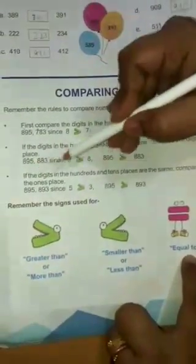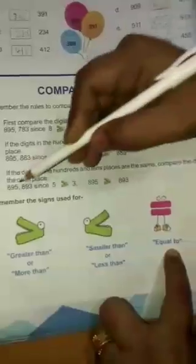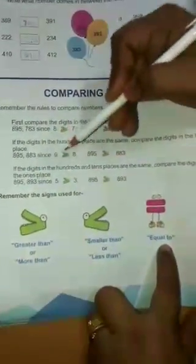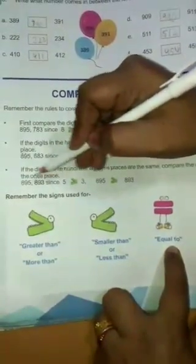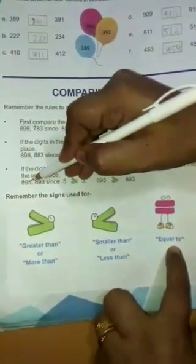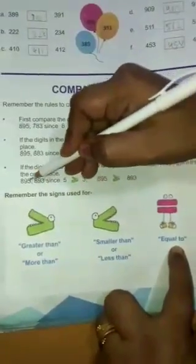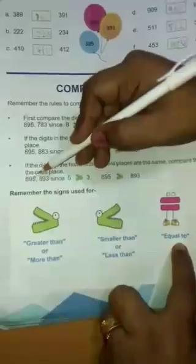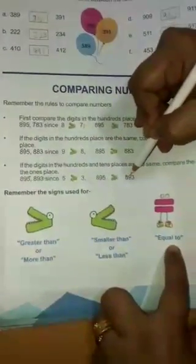Next, if the digits in the hundreds and tens places are the same, for example 895 and 893. Then, we will compare the digits in the ones place. This 5 will come under ones place and this 3 in ones place. So we will compare which is greater, 5 or 3. Obviously, 5 is greater. So, 895 will be greater than 893.